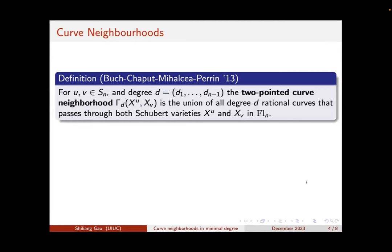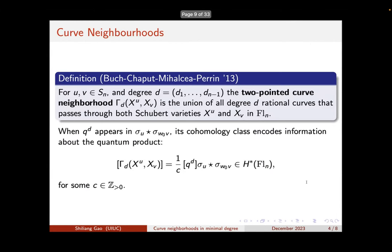To study these quantum products and Gromov-Witten invariants, Buch, Chaput, Mihalcea, and Perrin defined something called the curve neighborhood. If we fix two permutations U and V and fix a degree D — a sequence of N-1 non-negative integers — the degree-D curve neighborhood is the union of all degree-D rational curves passing through the opposite Schubert variety X_U and the Schubert variety X_V. This is very closely related to the quantum product: when Q^D appears in the product, the cohomology class of the curve neighborhood is 1/C times the Q^D part of the expansion of the quantum product, for some positive integer C.